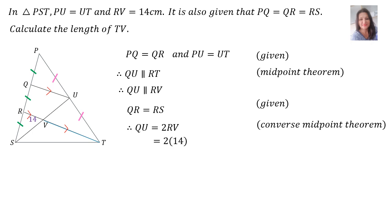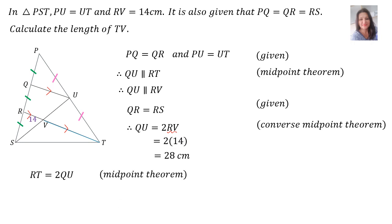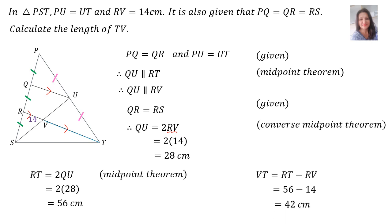Since RV equals 14, QU equals twice 14, which is 28. Then RT equals twice QU by the midpoint theorem. Since QU was 28, RT equals 56 cm. Now that we know RT's length, VT equals RT minus RV, which is 56 minus 14. Therefore, VT's length is 42 cm.